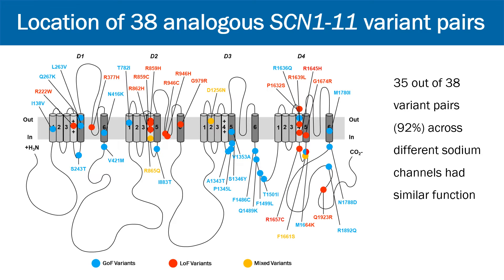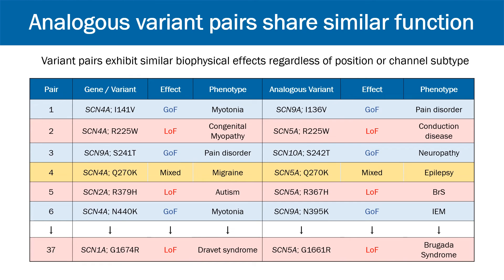We then mapped all our pathogenic variants onto the 2D illustration shown earlier. Circles represent variant pairs — variants that have occurred at analogous positions across two or more sodium channel genes. Of the 38 pairs identified, we found that 35 displayed very similar functional effects. This table displays a few of our variant pairs. You can see that while the sequence numbers for variants in each pair differ slightly, the respective locations on the channel protein are identical, and that regardless of phenotype, channel location, or channel subtype, the variants' biophysical effects are the same.